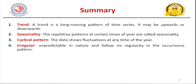To summarize the components of time series analysis: Trend is the long-running pattern of the time series, either upward or downward. Seasonality is repetitive patterns at certain times of the year, repeating by the time frequency — weekly, monthly, or yearly. Cyclic patterns show fluctuations at any time of the year with alternating upward and downward movements. Irregular patterns are unpredictable in nature and follow no regularity in the occurrence of patterns. These are the components of time series analysis.